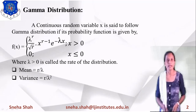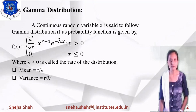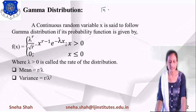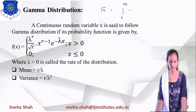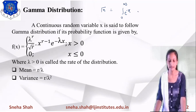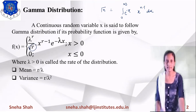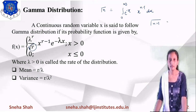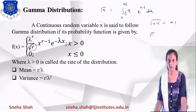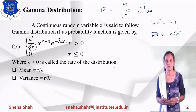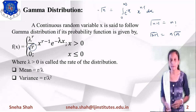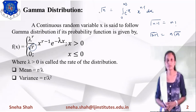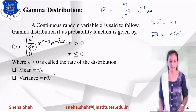Now, if we are finding the value of the gamma function Γ(r), the value of Γ(n+1) equals the integral from 0 to infinity of e^(−x) · x^(n−1) dx. If we apply this using r in place of n, then Γ(n+1) equals n factorial, which is also written as n · Γ(n). Based on this, we find values used in the gamma distribution.